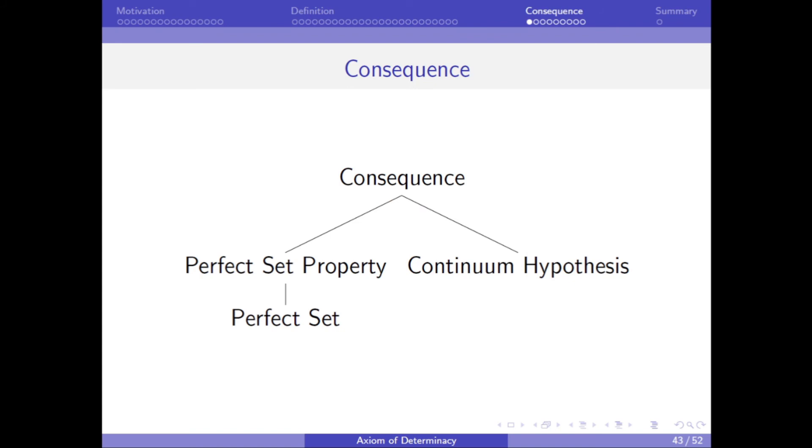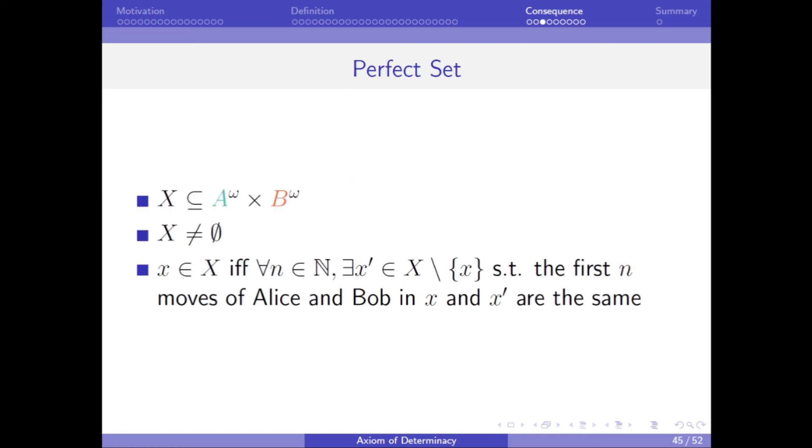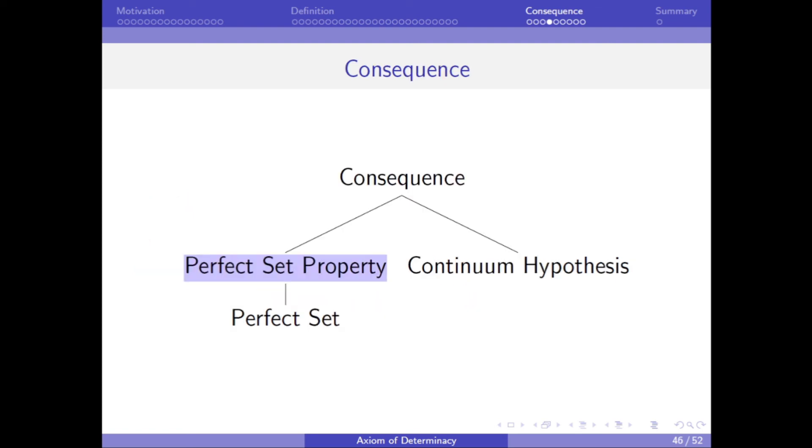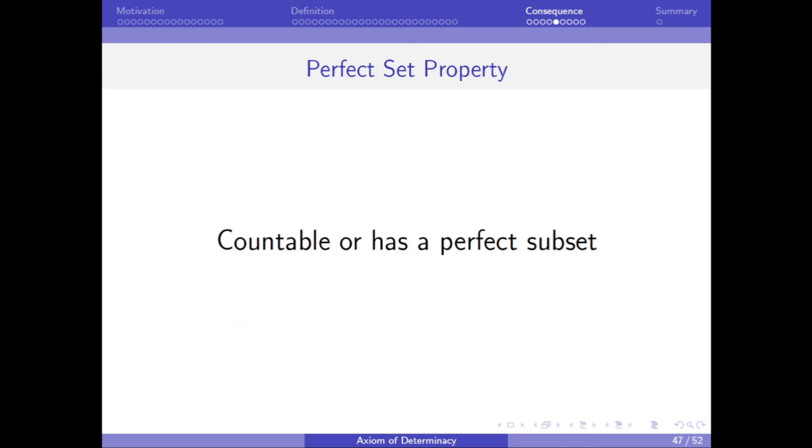Having now defined the axiom of determinacy, we can give one of its nice consequences. But to do this, we need to define a perfect set, which is a non-empty set of plays such that its elements are the plays where for every natural number N, there is a different play which shares the same first N moves of Alice and Bob. This can be thought of as saying that for each play in the perfect set, there is an arbitrarily similar, but different play also in the set. And the perfect sets allow us to define a regularity property called the perfect set property, which is when a set is either countable or it contains a subset that is a perfect set.